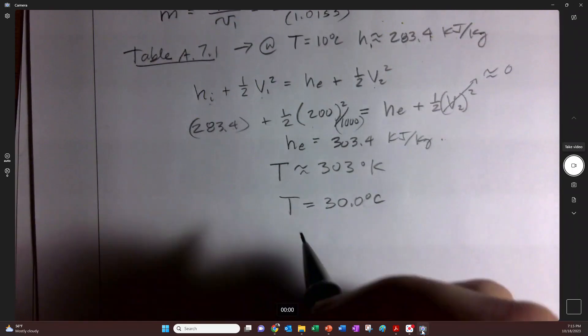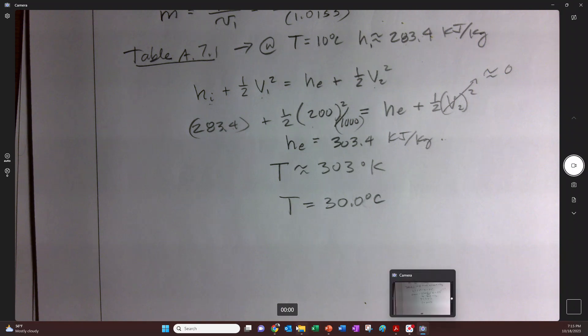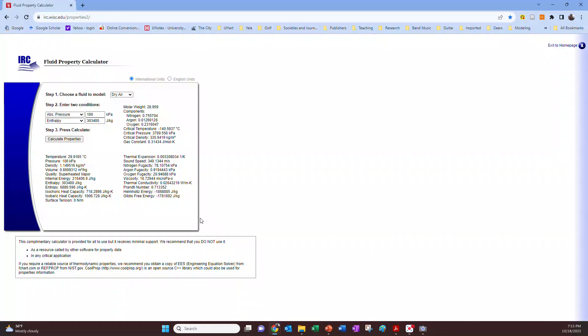But if you go to this website right here and use this tool, because I don't own EES, which is the engineering equation solver and it costs money, or any of these other things, this is the website I like the most lately for all the different ones that it has available for it. You'll see that we get 29.91 degrees Celsius, which is a good estimate.